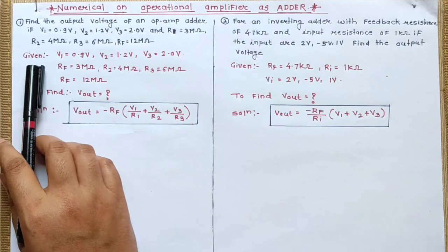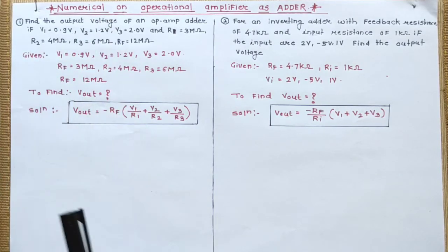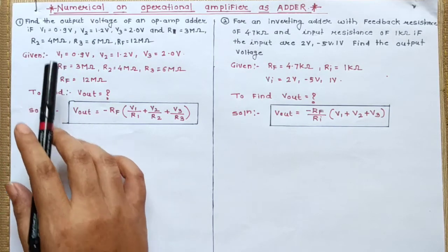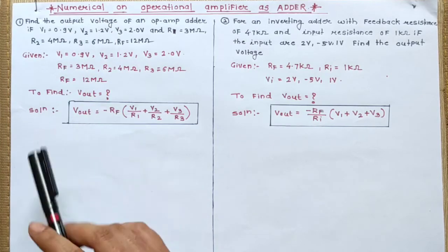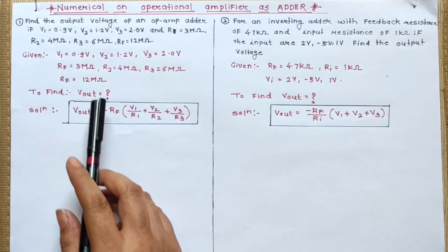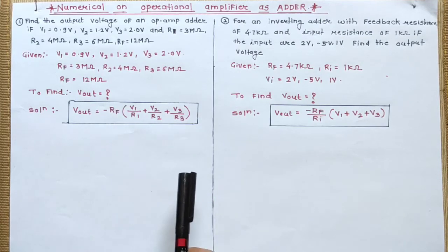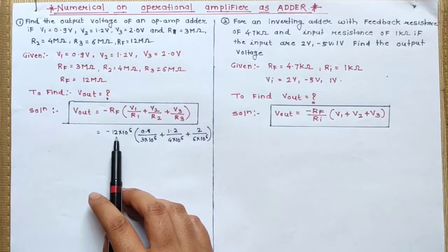So given V1, V2, V3, you have to use this formula. Okay, so put the value in this formula. The value of Rf is 12 mega ohms, so 12 into 10 to the power minus 6.